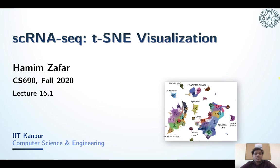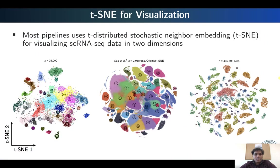Hello everyone. Today we are going to talk about how single cell RNA sequencing data is visualized in two dimensions using the algorithm known as T-SNE, or the full name is T-distributed Stochastic Neighborhood Embedding, but most popularly it is known as T-SNE.